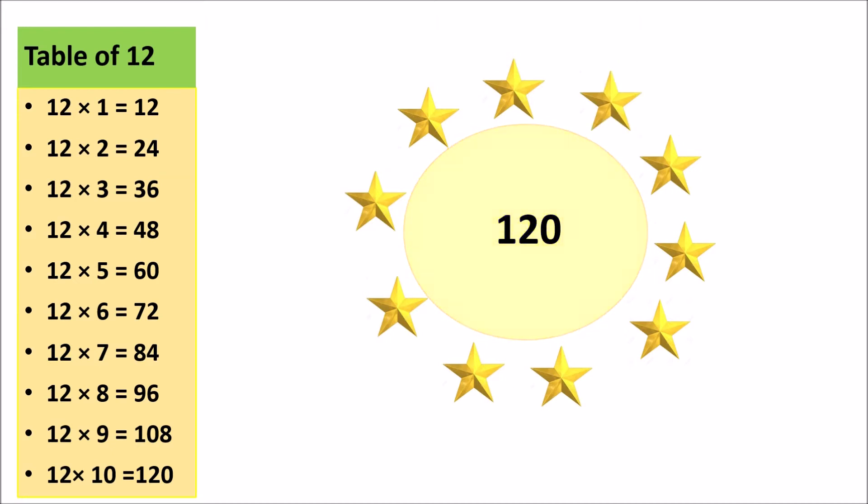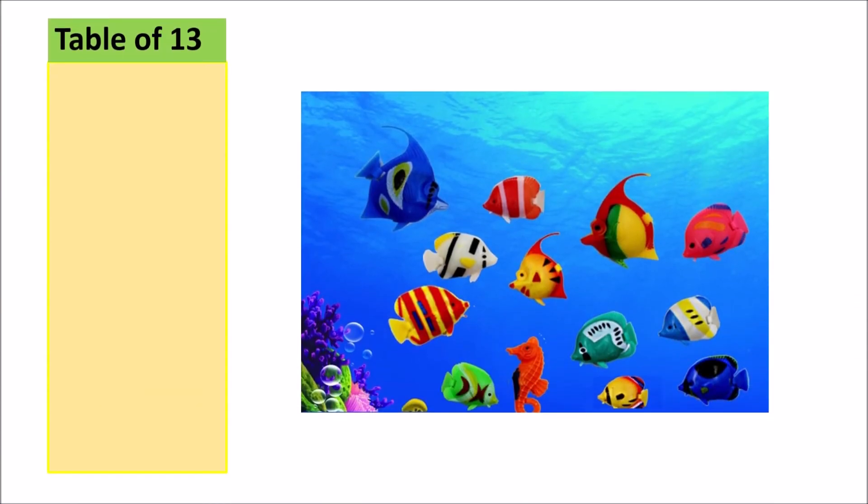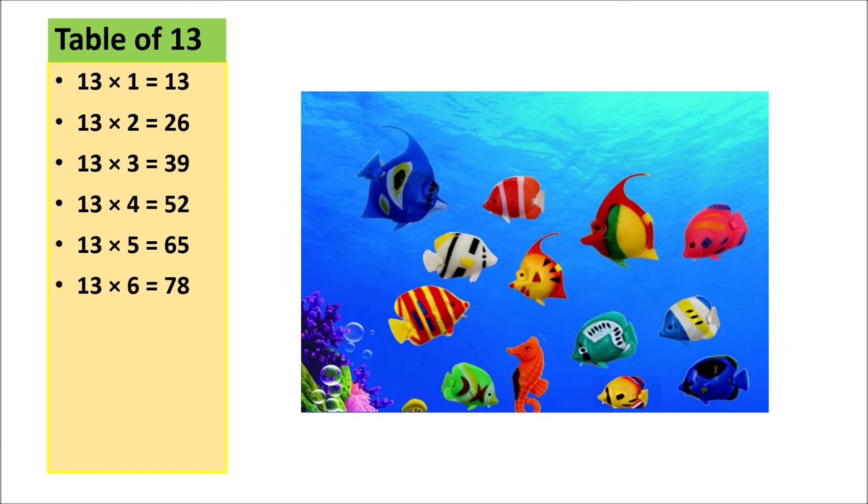Table of 13. 13 1s are 13, 13 2s are 26, 13 3s are 39, 13 4s are 52, 13 5s are 65, 13 6s are 78, 13 7s are 91, 13 8s are 104, 13 9s are 117, 13 10s are 130.